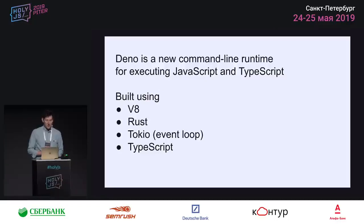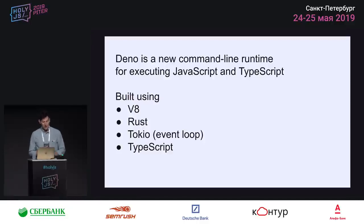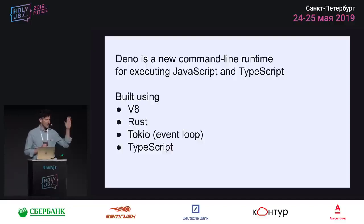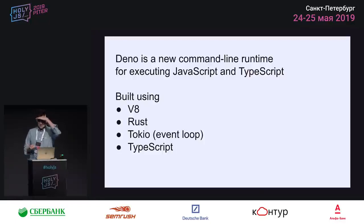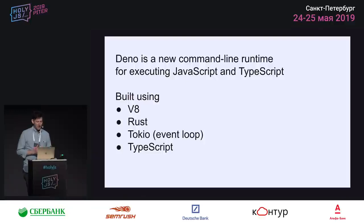That said, Deno is a new command line runtime. It executes JavaScript and TypeScript, and it's built on top of V8, Rust, and Tokyo. How many people know Tokyo? No one. How many people are Rust programmers? One. Well, you guys should check out Rust — it's very nice. And also Tokyo, and the TypeScript compiler itself.